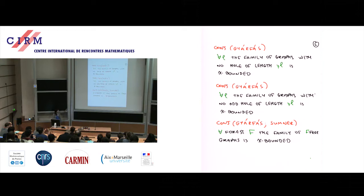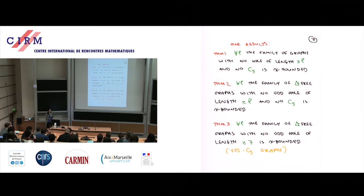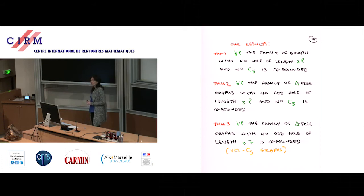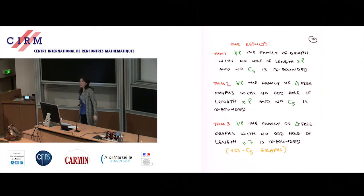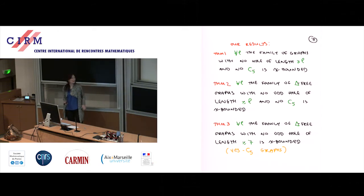Let me go back to the top two conjectures — excluding long holes and excluding long odd holes — and state what our theorems are. The first theorem: if you exclude all long holes and also exclude C5, then the family is chi-bounded. This is like the top conjecture except we're also excluding C5. This is actually an older theorem of Alex Scott, but it's part of the paper I'm talking about.